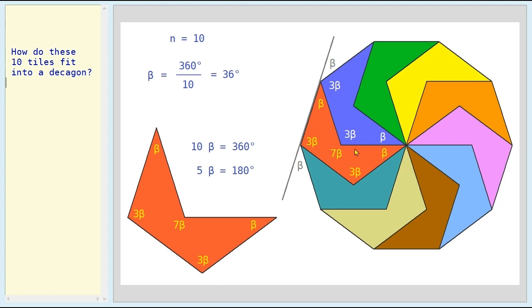And then here, this should be 360 degrees: 3 beta plus 7 beta is 10 beta, and 10 beta is 360 degrees. And then in the middle, around there, we have 10 beta again — 10 beta is 360 degrees.